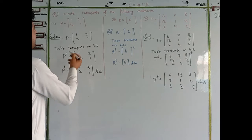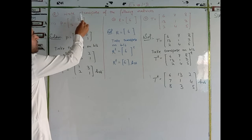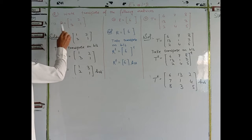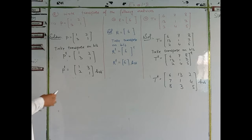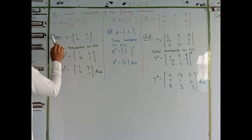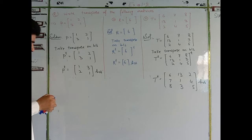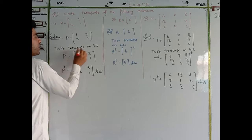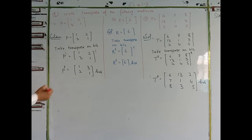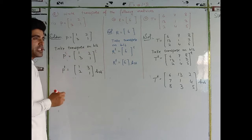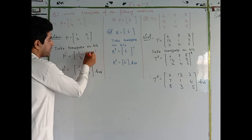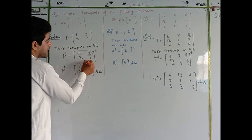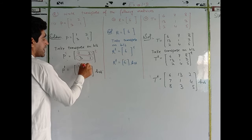Question number one from exercise 1.2: find the transpose of the following matrices. For matrix P, we have elements 1, 2, 3, and the transpose is obtained by changing the first row to the first column and the second row to the second column.